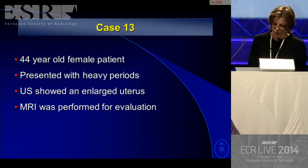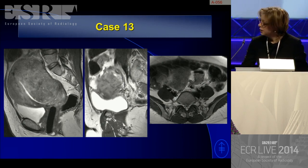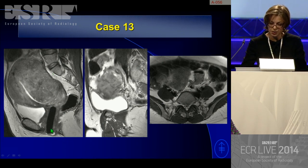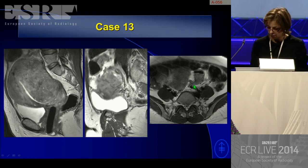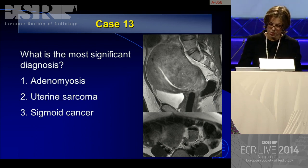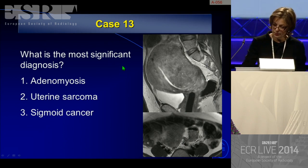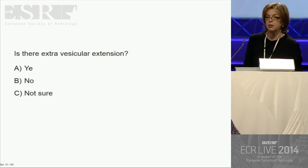A 44-year-old female presenting with heavy menstruation. Ultrasound shows an enlarged uterus; MRI is performed for further evaluation. On sagittal imaging — the patient has a tampon in the vagina — the uterus shows adenomyosis. But on a parasagittal and axial image, there is something else going on. The question is: what is the most significant diagnosis? Adenomyosis, uterine sarcoma, or sigmoid cancer?